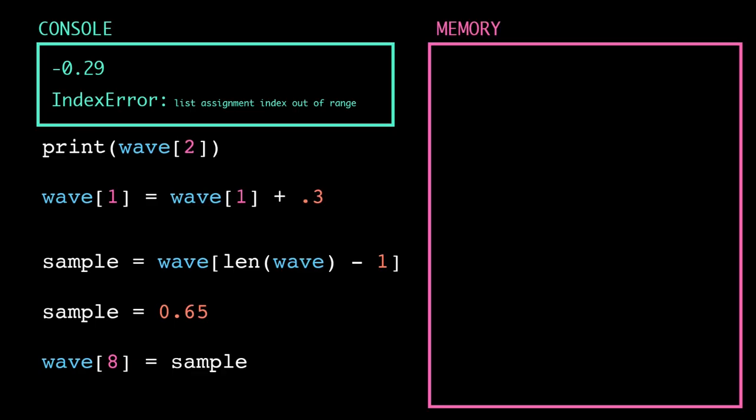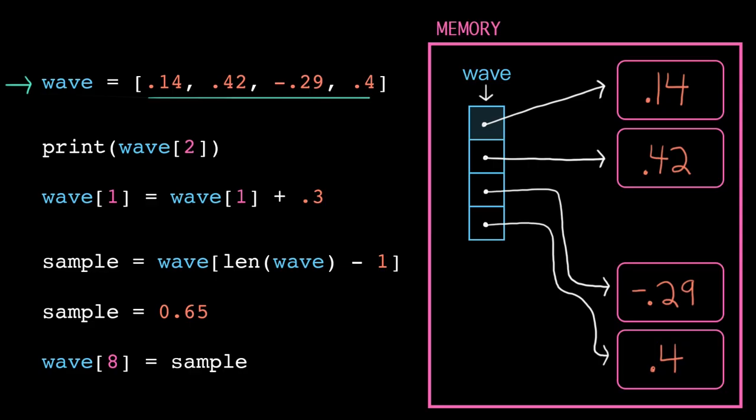Zooming out, the computer does make a few other optimizations here and there when storing lists in memory. For example, it actually pre-calculates and stores the length of a list, so it doesn't have to count the number of elements each time. There is a whole field of study in computer science dedicated to optimizing, evaluating, and comparing the efficiency of data structures, like lists. But for now, let's focus on how to use lists in our programs before we go too deep on the theory.